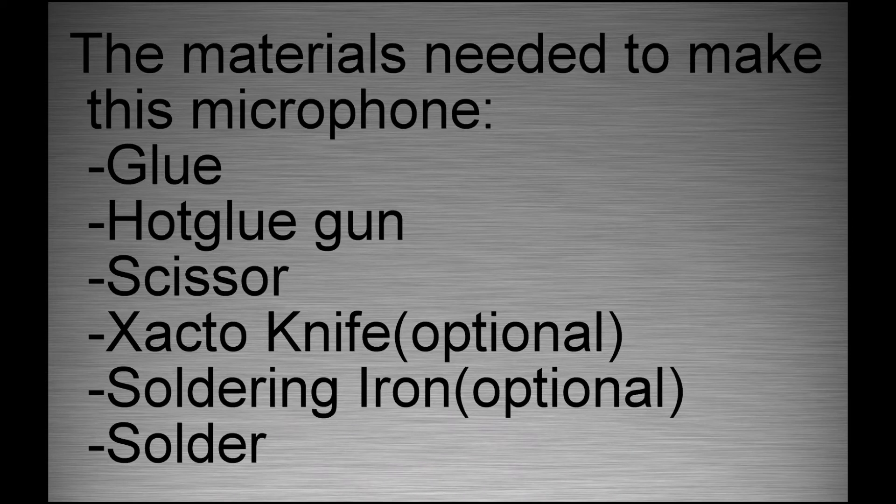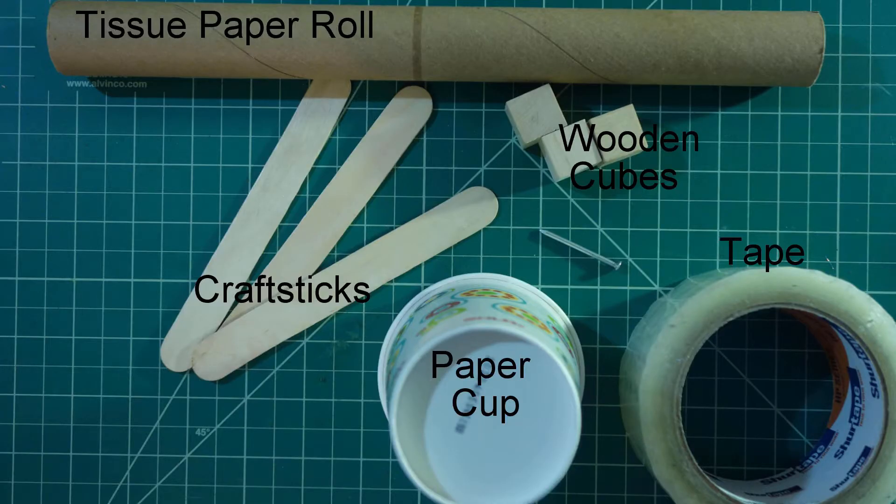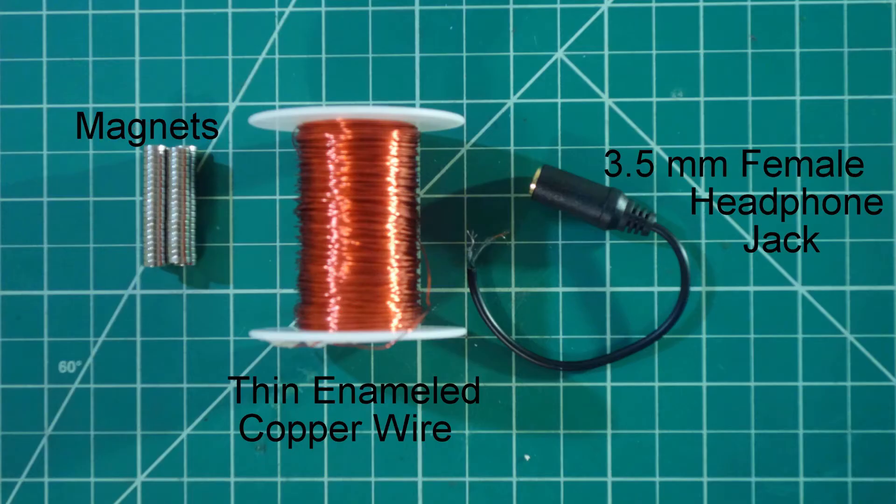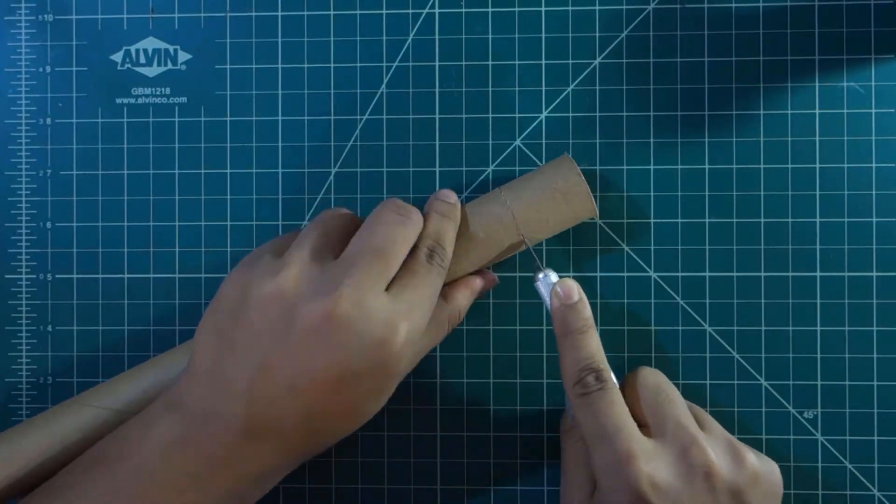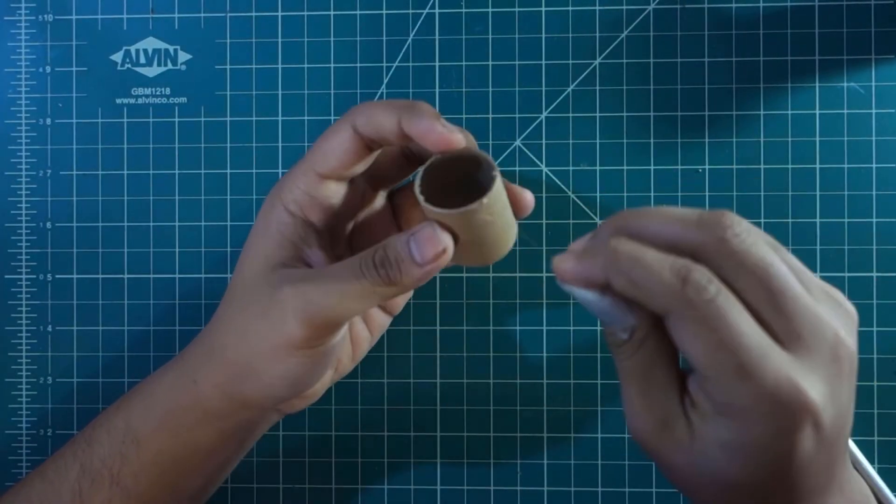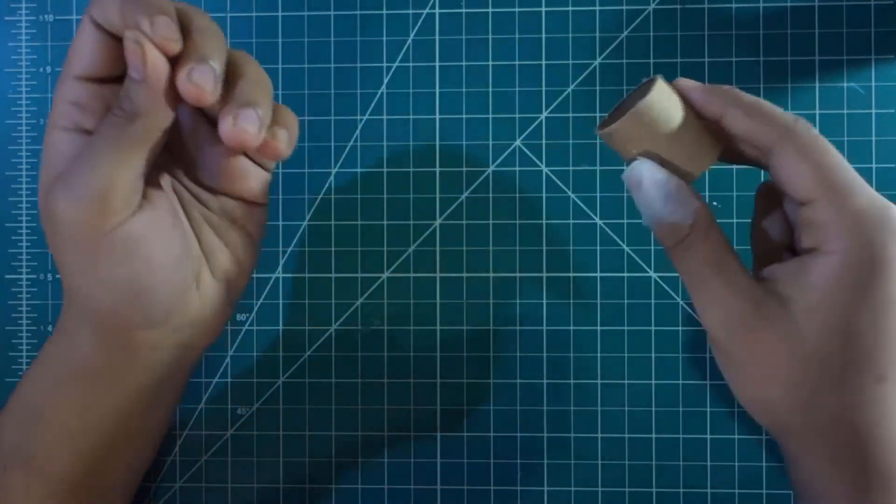The materials needed to make this microphone are given below. So, first take the tissue paper roll and mark one inch from the end, and cut the tube from the end using a Xacto knife. Pass the thin copper wire through the hole and leave about two inches at the end. Tape it down so it doesn't move.